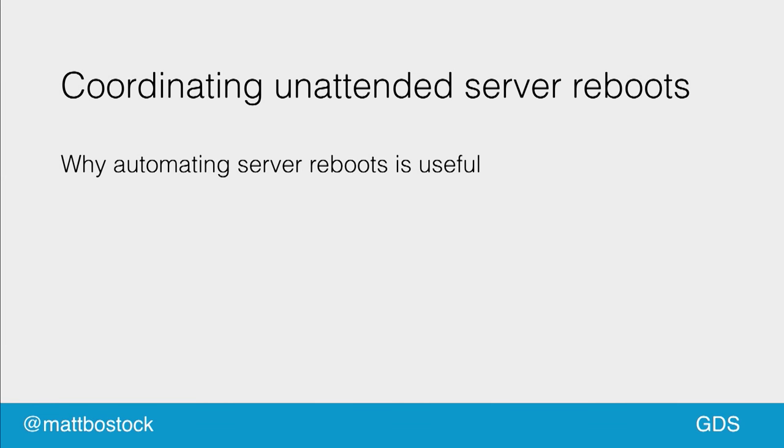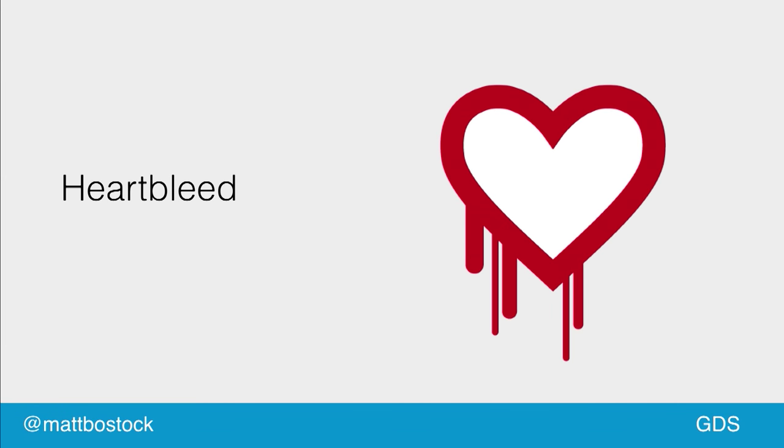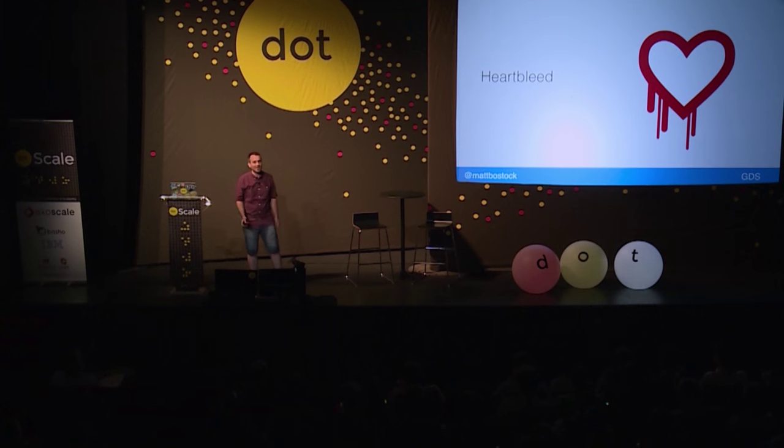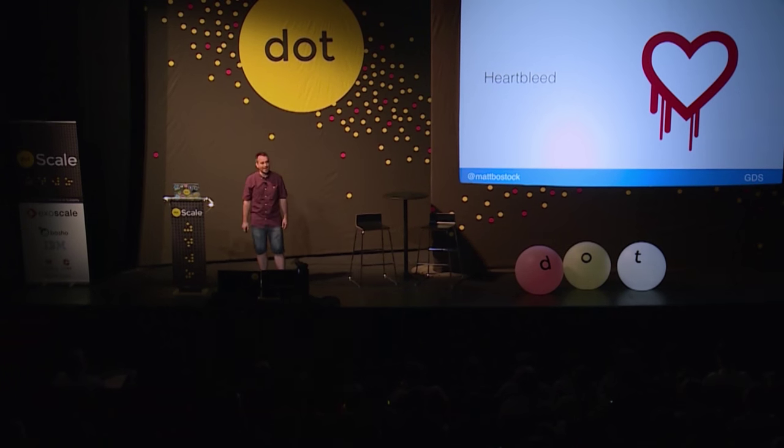So why are unattended reboots useful? We patched Heartbleed pretty quickly — within about 4 to 6 hours of Ubuntu releasing the update for most of our servers, and then within 12 hours for the rest. It was quite a manual process; we had a few people involved, but we got it done quickly.